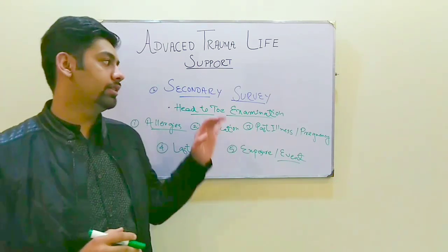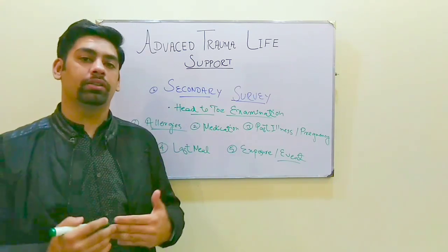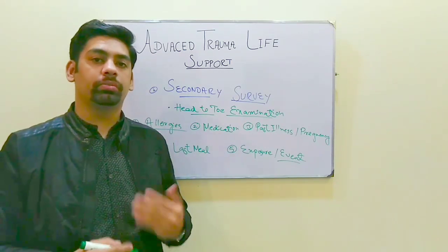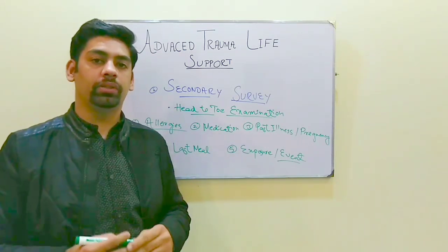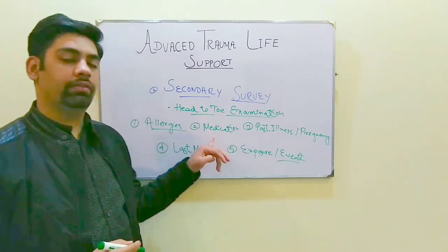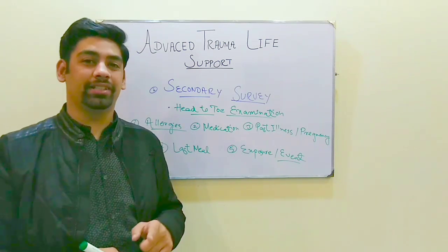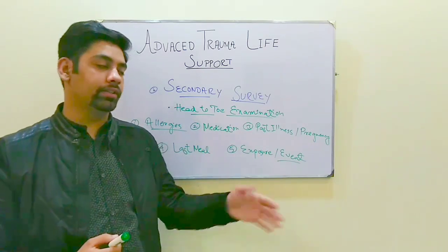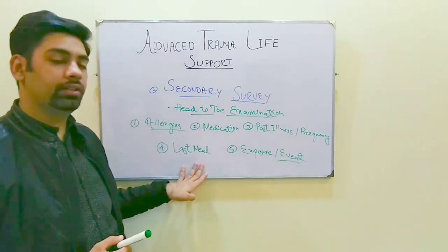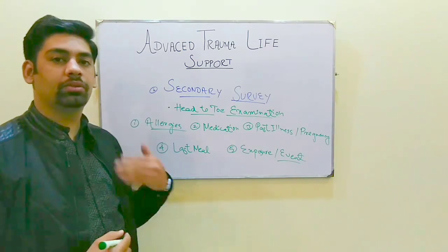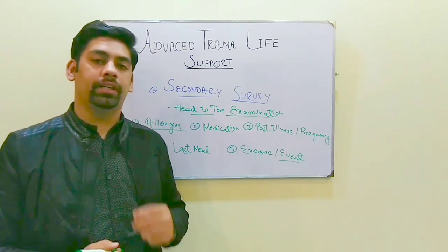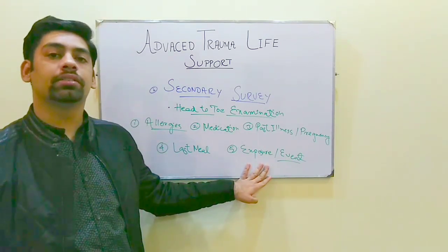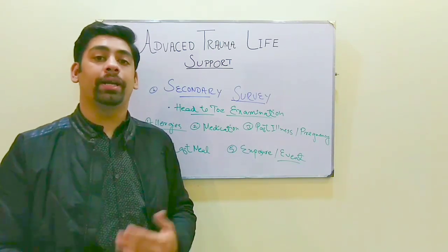After the primary survey is done, the secondary survey is started in which the doctor asks the patient about any allergies which need to be noted to prevent further complications. The second thing addressed is medication — whether the patient is taking medication for any disease. Then, the doctor asks whether the patient was pregnant, about the last meal to identify any complications during the surgical process, and about the mechanism of injury.